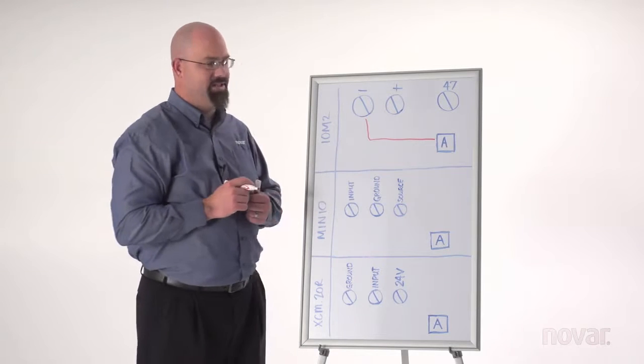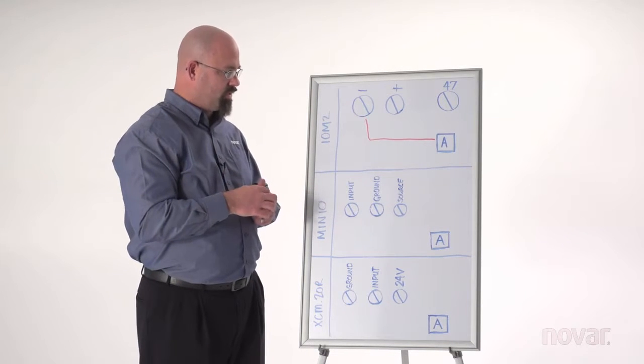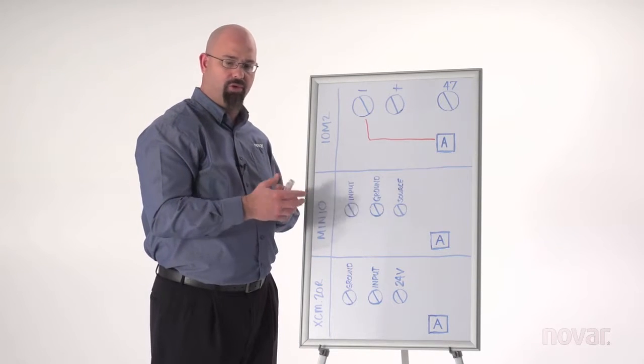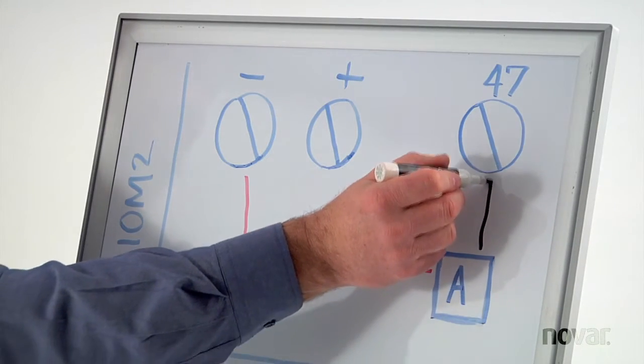Now this is a DC signal, so we need to have a reference on this DC signal. So from that sensor, we'll have a GND or a ground or a common terminal, and we're going to connect that to the IOM-2's terminal 47.